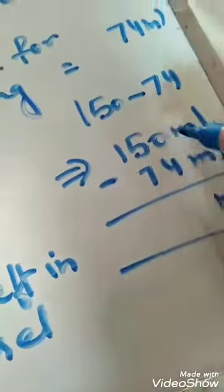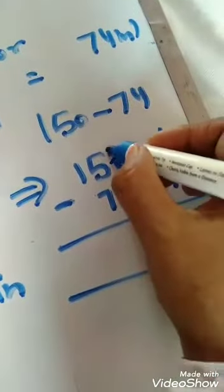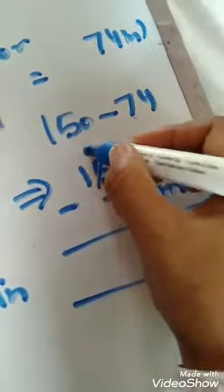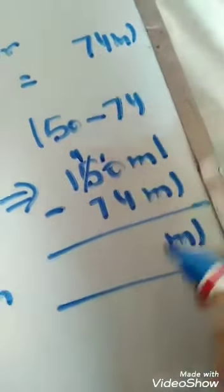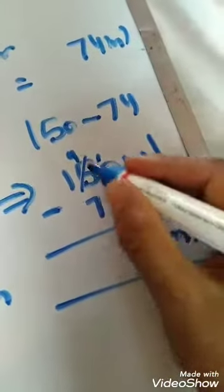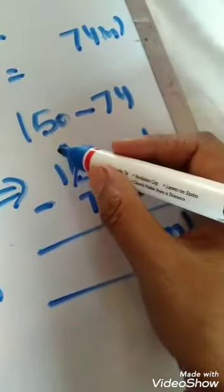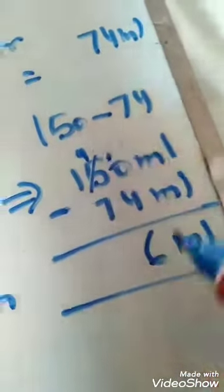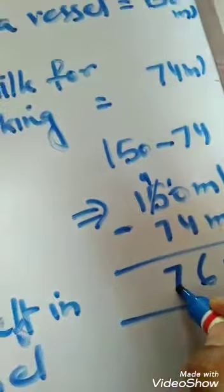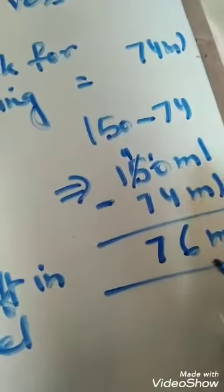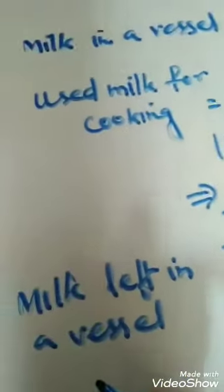So 4 out of 0. Can we subtract 4 out of 0 directly? No. We will carry 1 from 5. So it will become 4 and this will become 10. So 4 out of 10 is 6. 7 out of 4 is not possible, so we will also carry 1 here. So it will become 14. So 7 out of 14 is 7. So what is our answer? Our answer is 76 ml is left in the vessel.